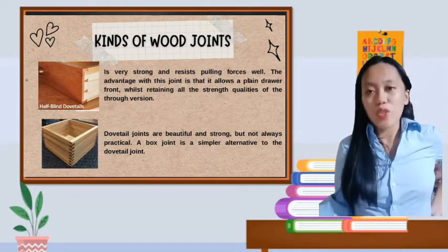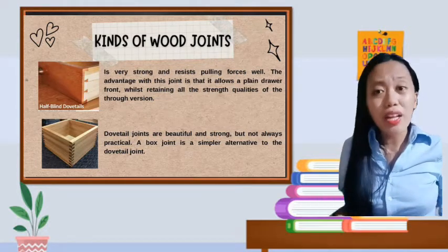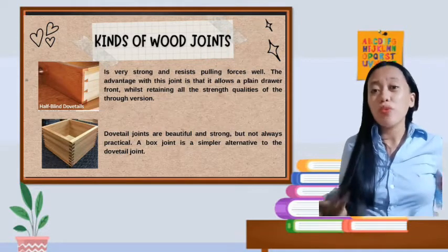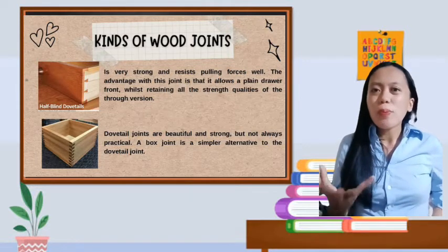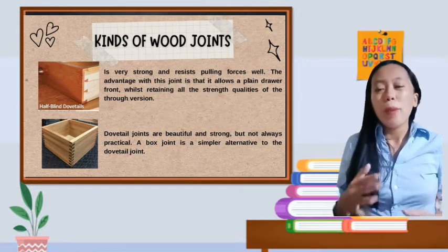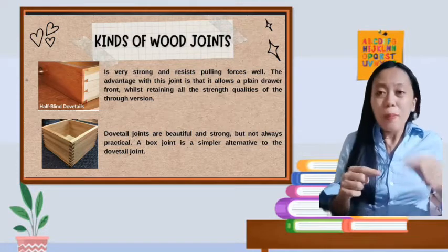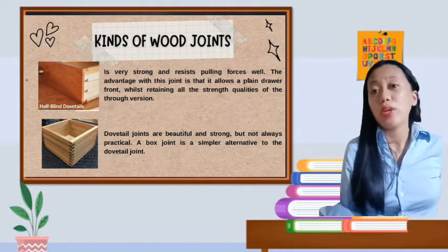Let's proceed to the box joints. From the word box, a box is a simpler alternative to the dovetail joint. Because dovetail joints are beautiful and strong but not always practical. It's not practical because it's not that strong. For the box joints, there are really more pins and tails and it's really strong and will last longer to use.